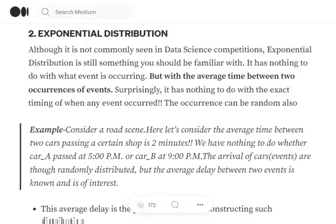It's a time-dependent distribution. For example, consider a road scene where the average time between two cars passing a certain shop is two minutes. If one car passes at 5:00 PM, another car passes around 9:00 PM on average - just an example.